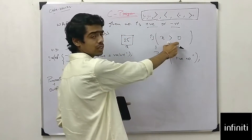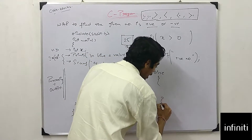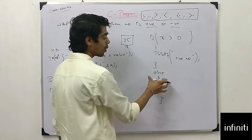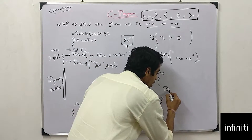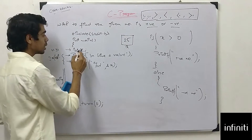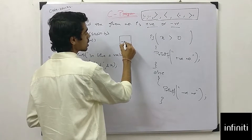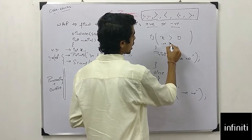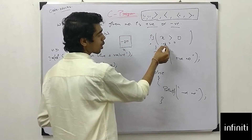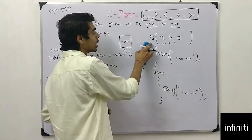If x is not greater than 0, it means x is less than 0, and it will fall into the else condition. We don't need to write a condition for else — if the if condition is not satisfied, the else block runs. So we write: else, print 'negative number'. For example, if x is minus 20, it will not satisfy the if condition and will go to else and print 'negative number'.